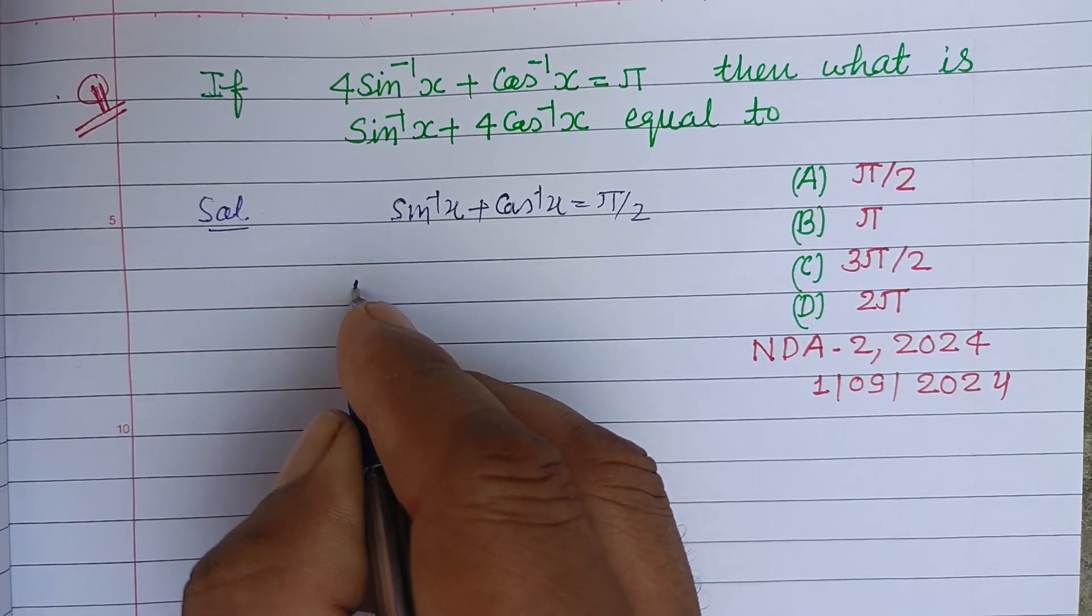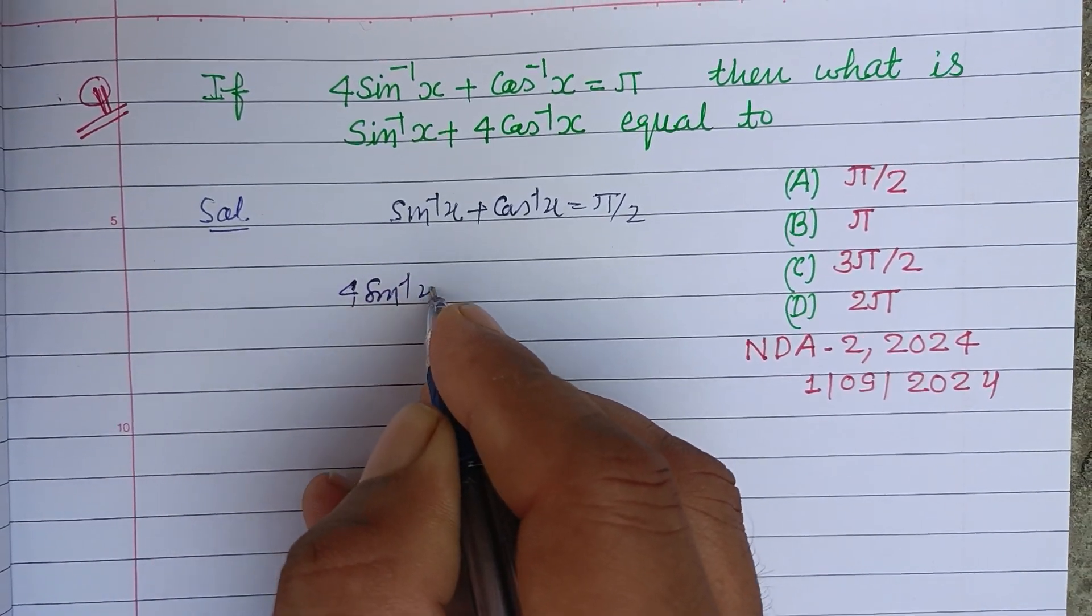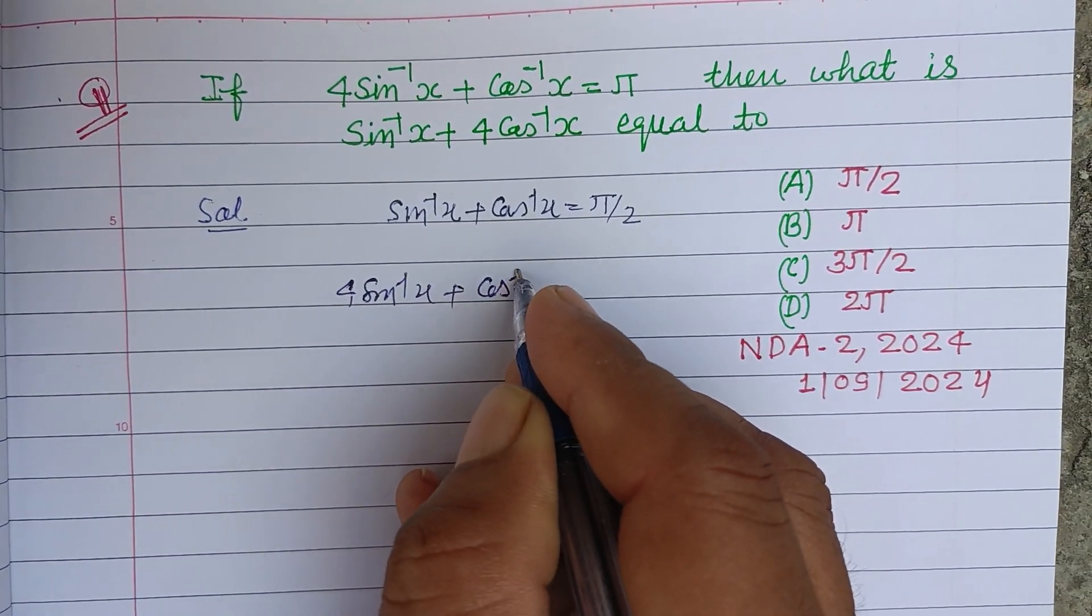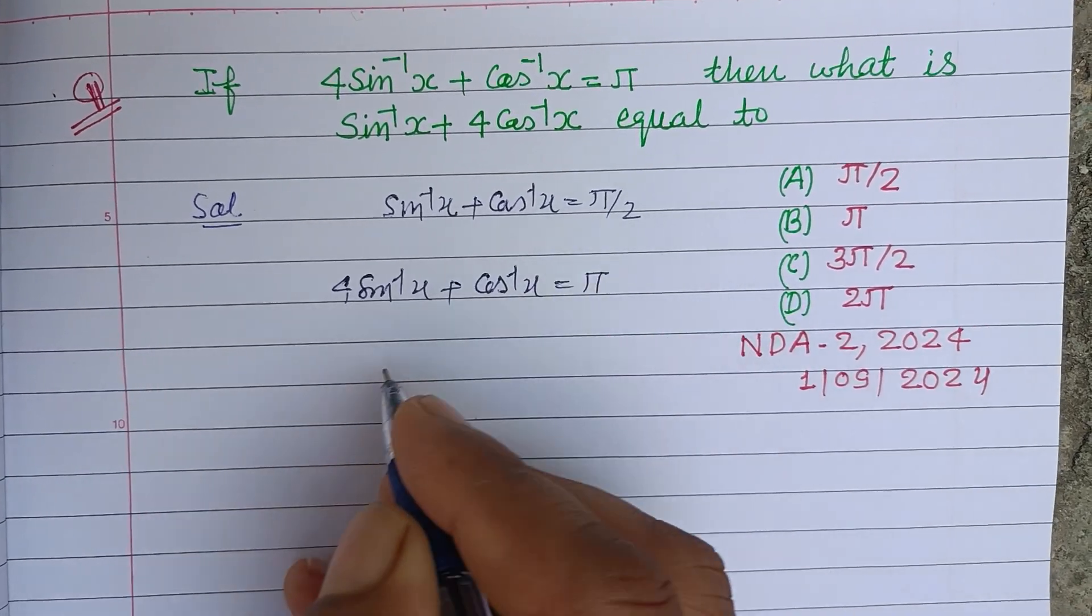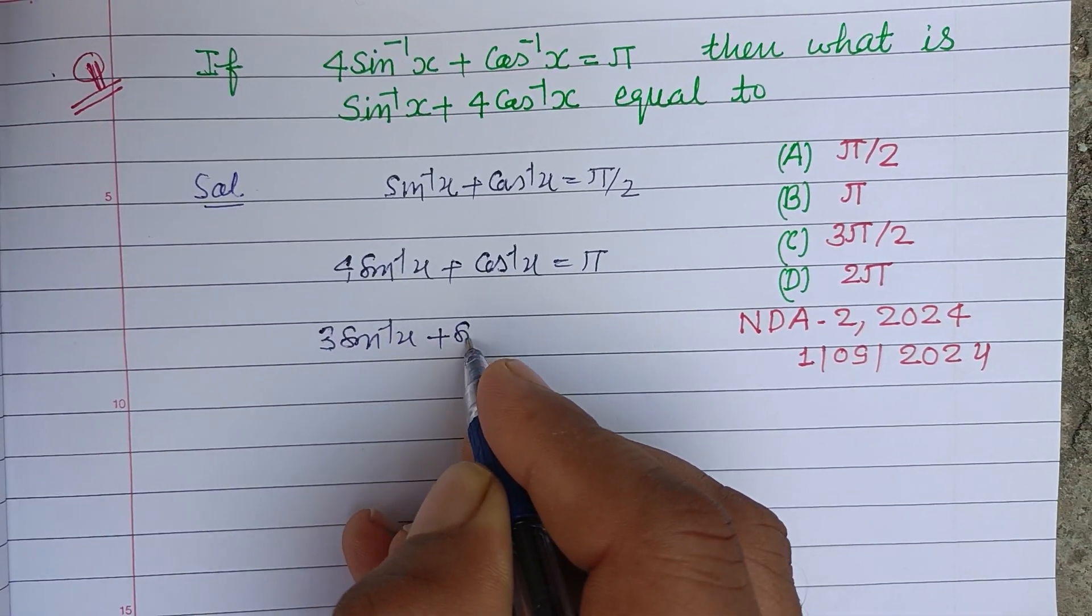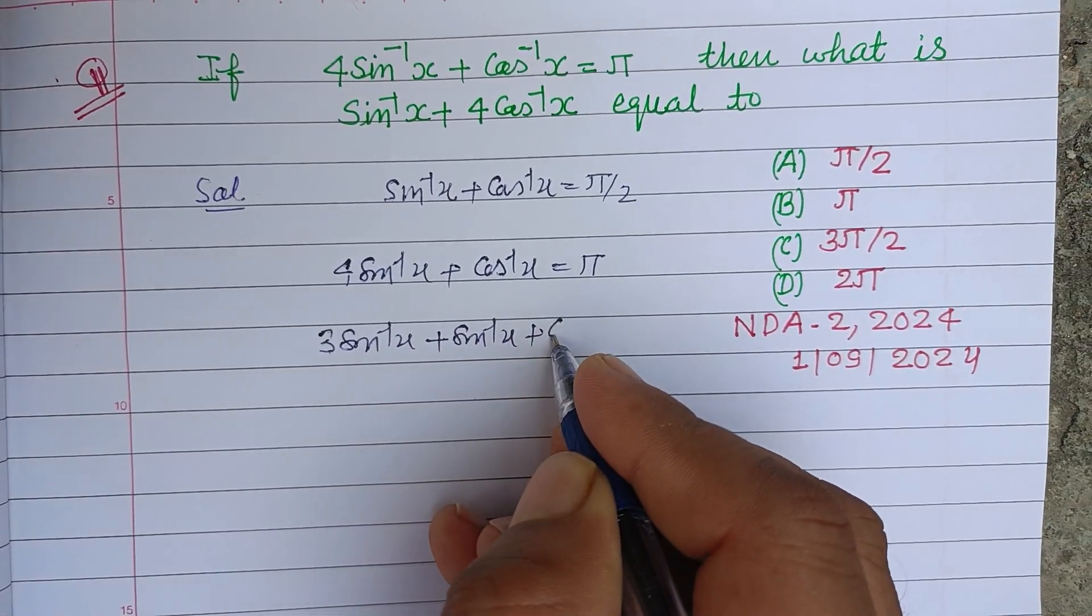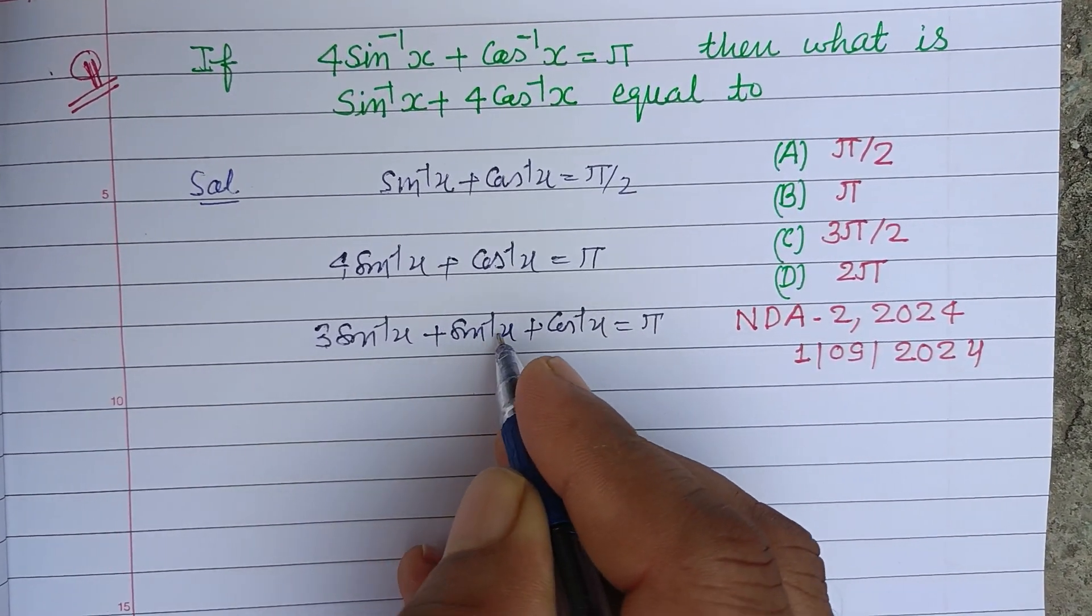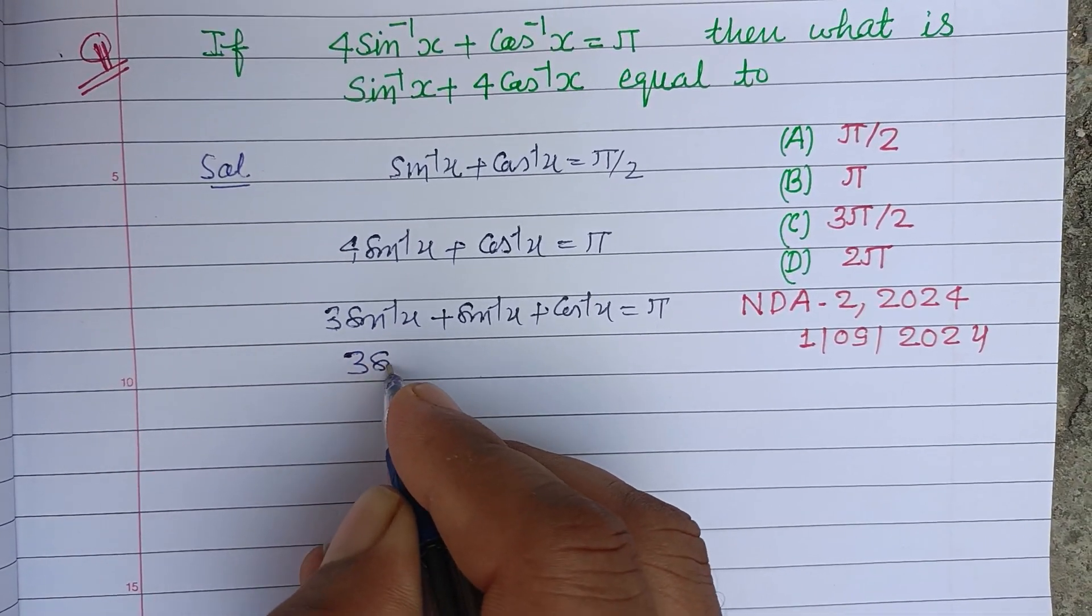Here we have 4sin⁻¹x + cos⁻¹x = π. We write it as 3sin⁻¹x + sin⁻¹x + cos⁻¹x = π, and this is π/2.